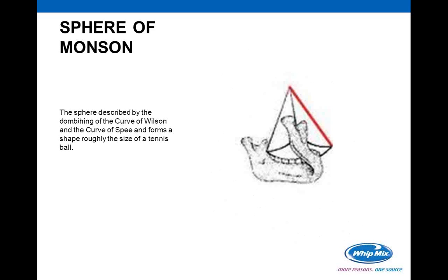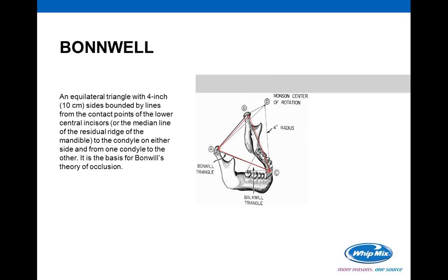There's also the sphere of Monson, described by the combination of the curve of Wilson and the curve of Spee — a shape roughly the size of a tennis ball that occurs at the base. We also have the Bondwell, which is an equilateral triangle based on approximately 110 millimeters of space occurring between the condyles of the mandible and the central point of the lower incisors. A lot of the theory of occlusion around articulation is based on Bondwell.